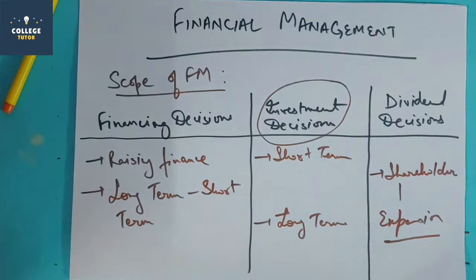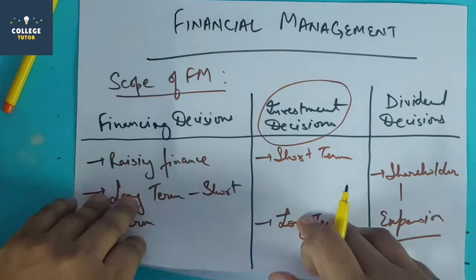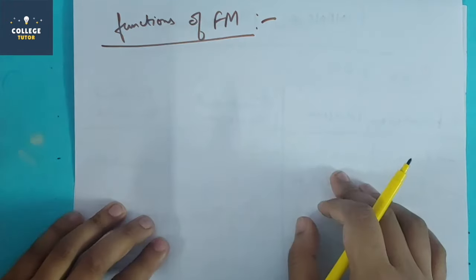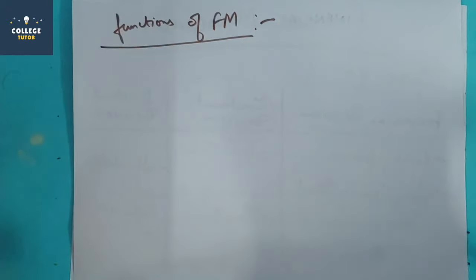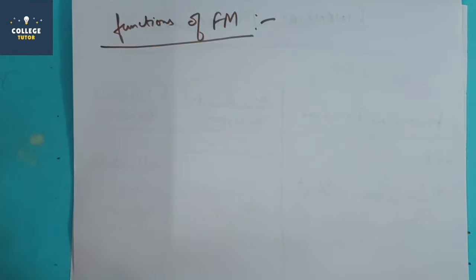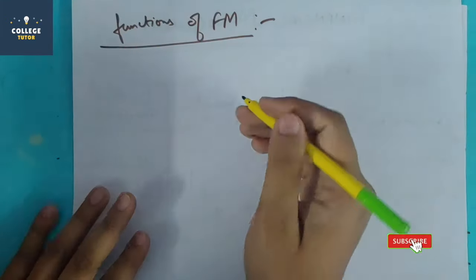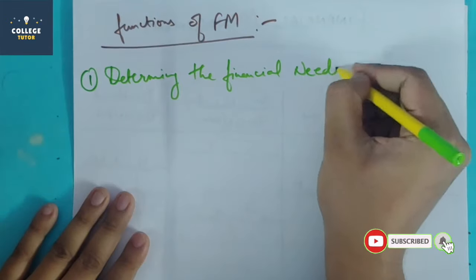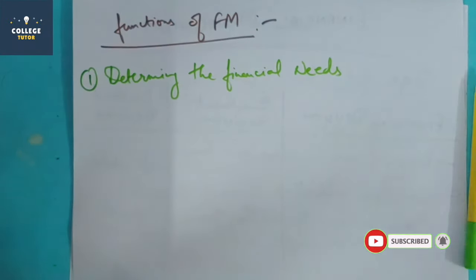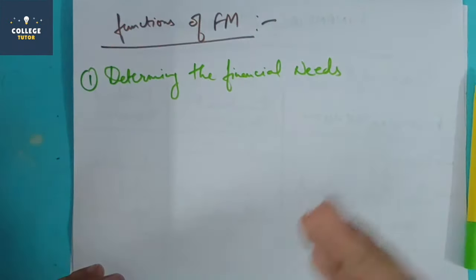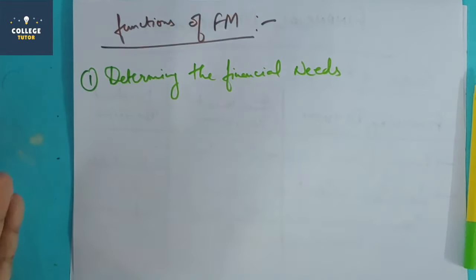After scope, we will discuss the functions of financial management. These points can be written in exams as well. First is determining financial needs — what are the company's financial needs, how much capital is needed for working capital, and how much money needs to be arranged. These are core responsibilities of financial management.